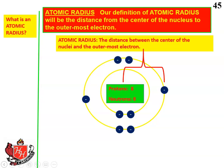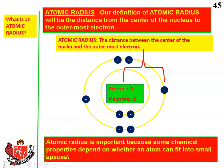So, atomic radius. This is the third topic we're going to deal with. Our definition of atomic radius will be the distance from the center of the nucleus to the outermost electron. Atomic radius is the distance between the center of the nucleus and the outermost electron — basically like the radius on a circle, which is the distance from the center to the perimeter. Atomic radius is important because some chemical properties depend on whether an atom can fit into a small space. It's essentially how big the atom is.